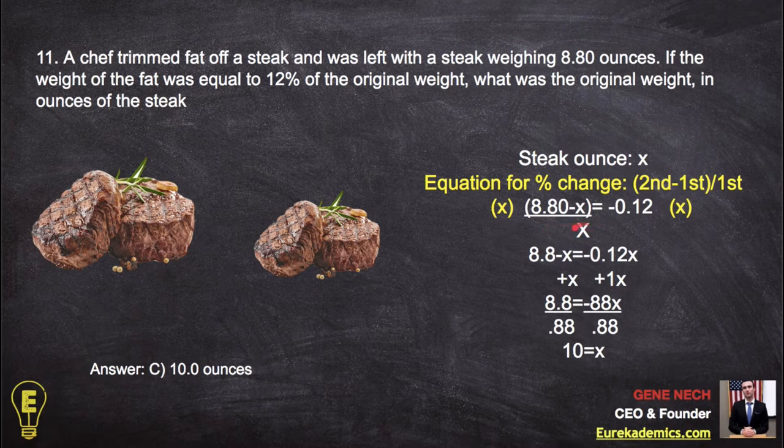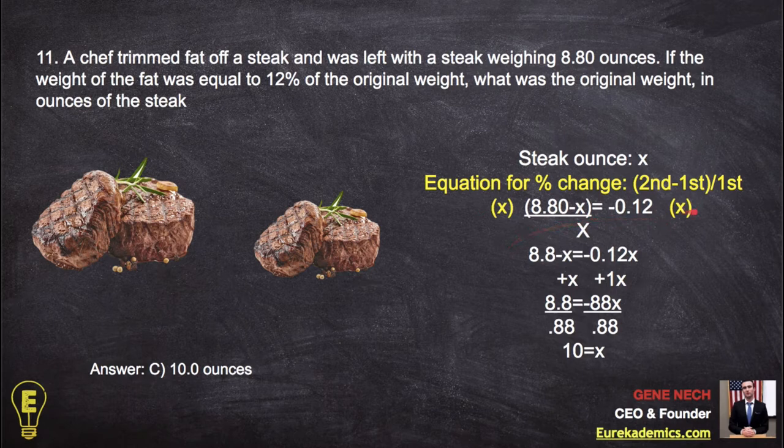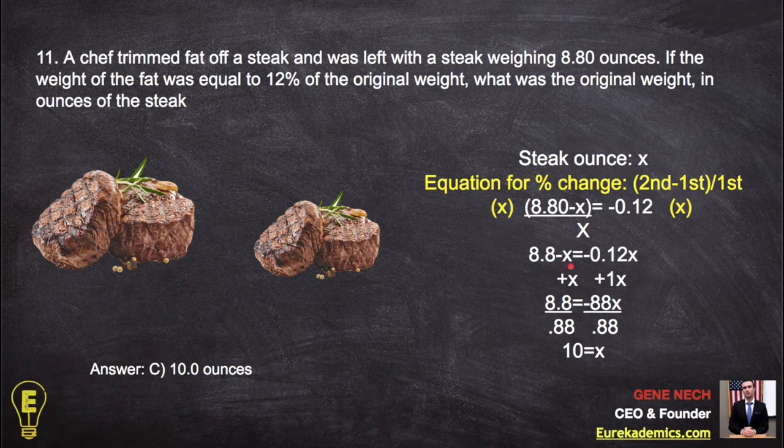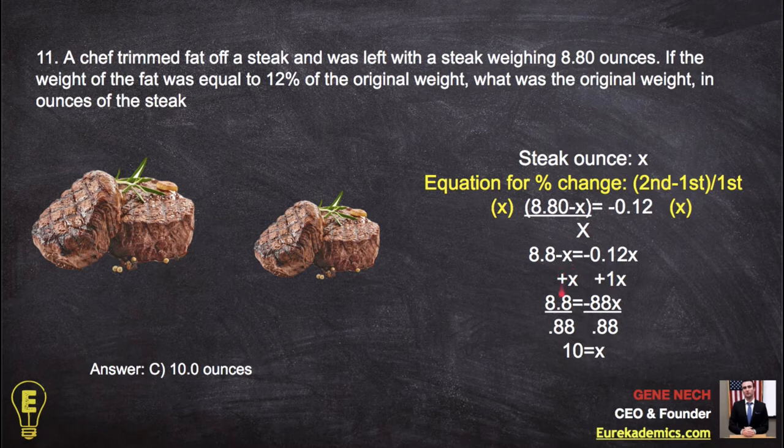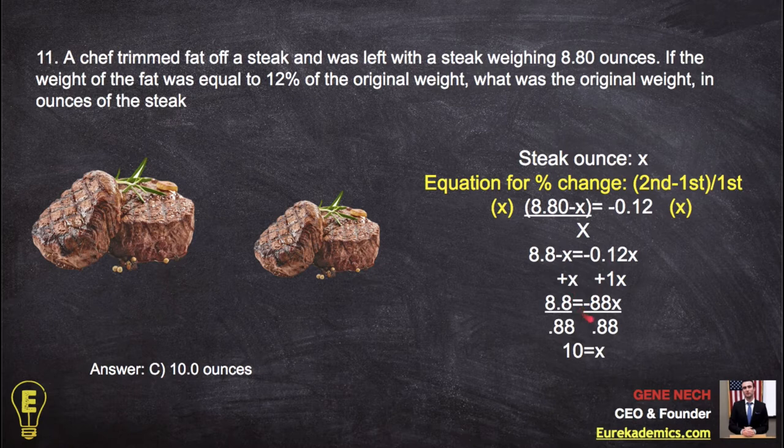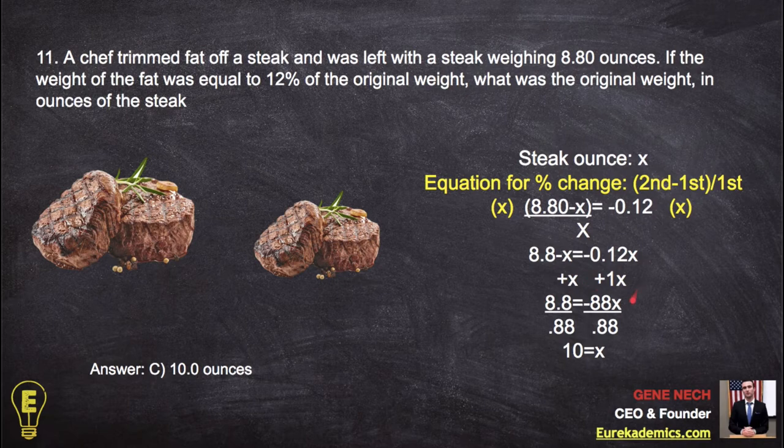So now we have an algebraic expression with only one variable, and we're good to solve. So this divided by x is the issue you need to focus on. We multiply everything by x over 1, or just x. So x divided by x cancels out, and we're left with 8.8 minus x. Good. Now this side turns into negative .12 times x. Good to go.